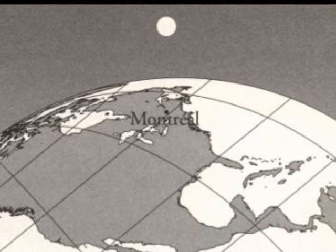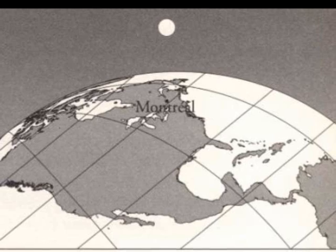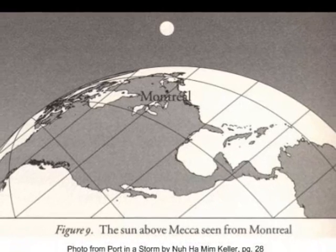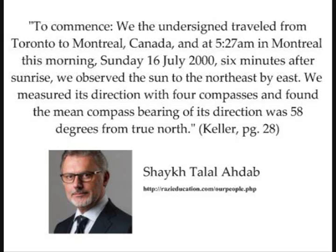This last visual proof was completed in Montreal on July 16, 2000, by Shaykh Talal Ahdab and two of his students. They observed that when the sun was directly over Mecca, one would have to face towards the northeast. They wrote the following: we the undersigned traveled from Toronto to Montreal, Canada. And at 5:27 a.m. in Montreal this morning, Sunday 16 July 2000, six minutes after sunrise, we observed the sun to the northeast by east. We measured its direction with four compasses and found the mean compass bearing of its direction was 58 degrees from true north.